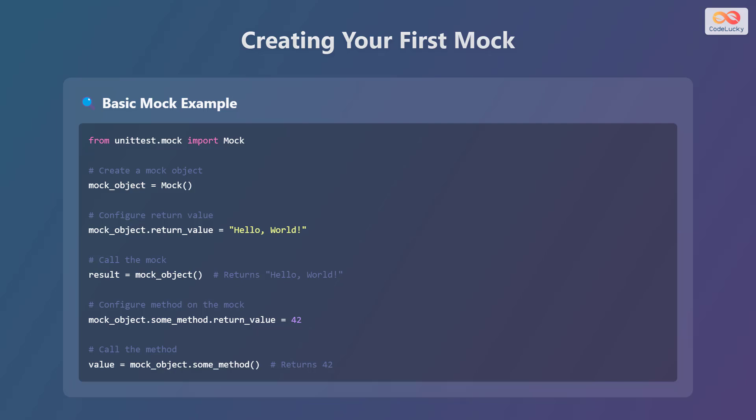Let's create your first mock object. To do so, first import Mock from unittest.mock. Then create a mock object by instantiating the Mock class. To configure a return value, set the .return_value attribute of the mock object. When you call the mock object, it will return the configured return value. Similarly, to configure a method on the mock, set the .return_value attribute of the method. When you call the method, it will return the configured value.